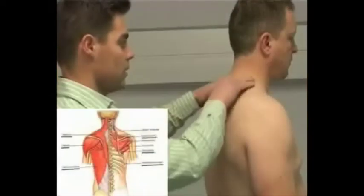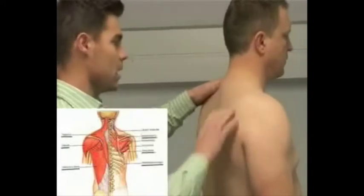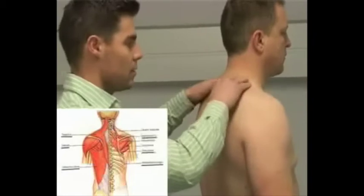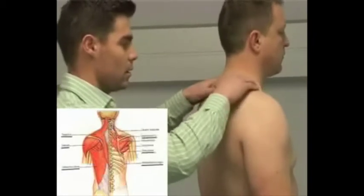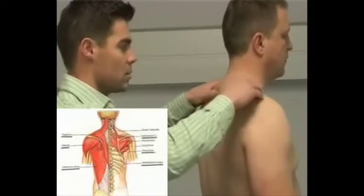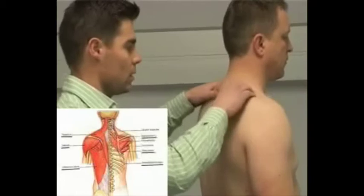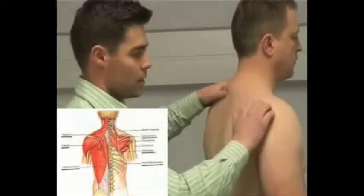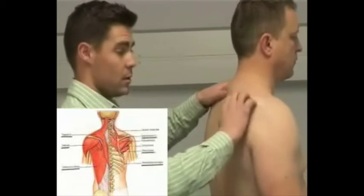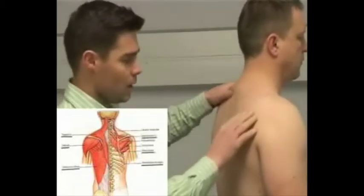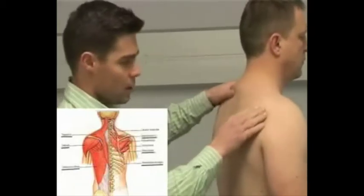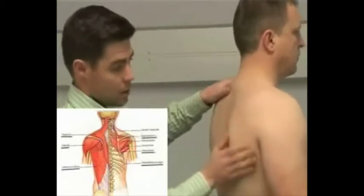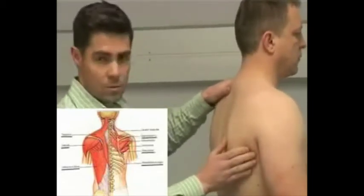Thereafter, one would typically go to the posterior aspect and palpate the trapezius muscle, feeling for any spasms as well as any lumps and bumps. Thereafter you can palpate the spine of the scapula and then the infraspinatus and teres minor muscles, which are situated below the spine.